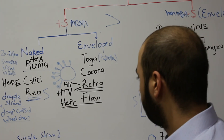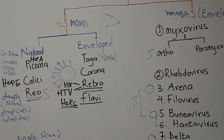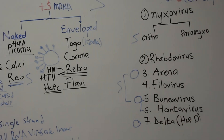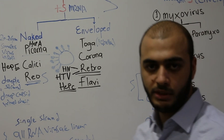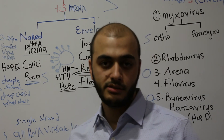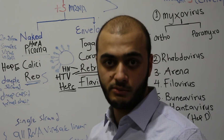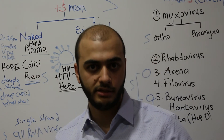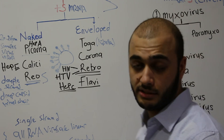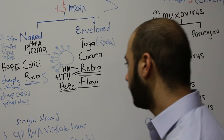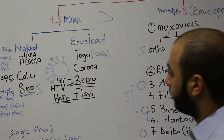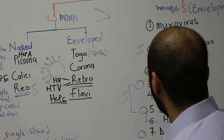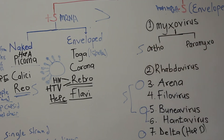To summarize the hepatitis distribution: Hepatitis A is in Picornavirus, Hepatitis C is in Flavivirus, Hepatitis D (Delta virus) is its own RNA family, and Hepatitis B — as mentioned in the DNA virus video — is a DNA virus in the Hepadnavirus family. So Hepatitis B is DNA, not RNA.